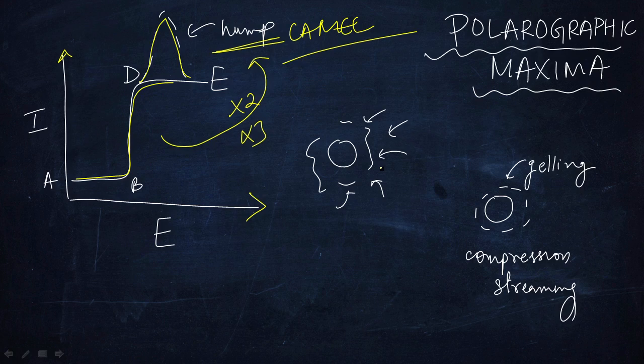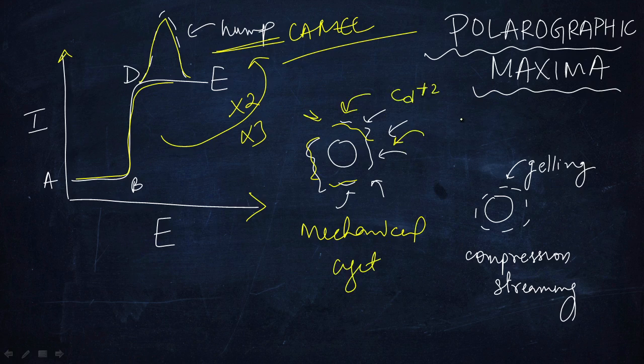When a drop of mercury falls into the test solution, there is mechanical agitation which happens because of the drop surface. The surface of Cd²⁺, cadmium plus two, which is an electroactive species.